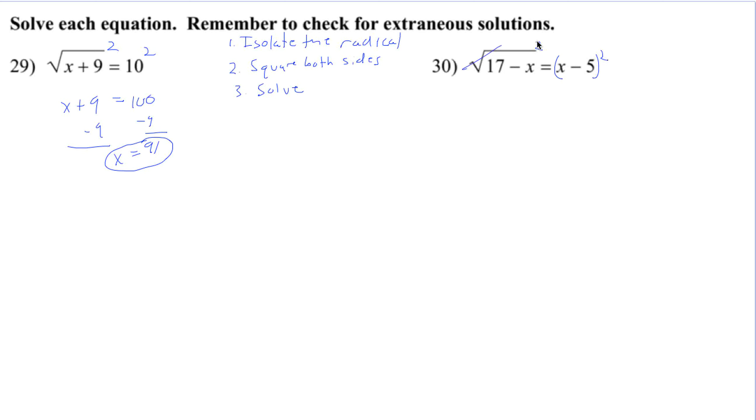On the left, square root and squared cancel. So you're left with 17 minus x. Over here, please multiply this correctly. Remember, this just means x minus 5 times x minus 5.